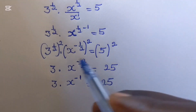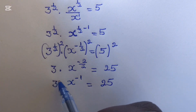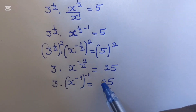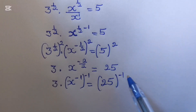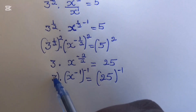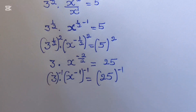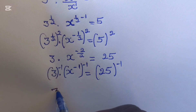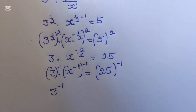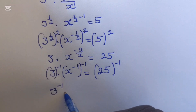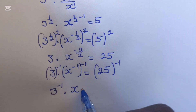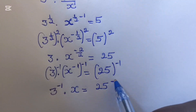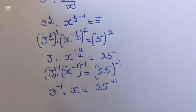Now we want to isolate x, so we multiply the exponent by negative 1 on both sides. This gives 3^(−1) times x equals 25^(−1).